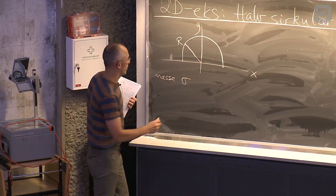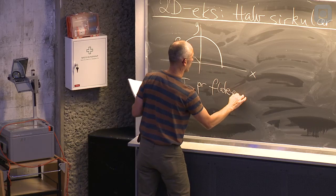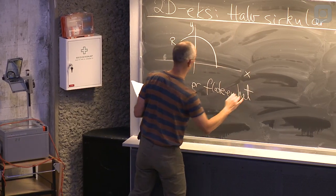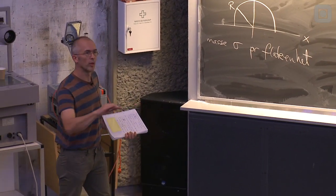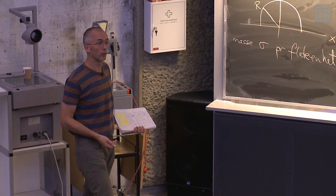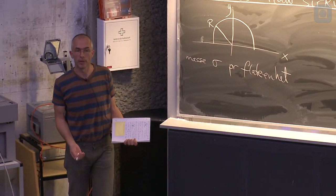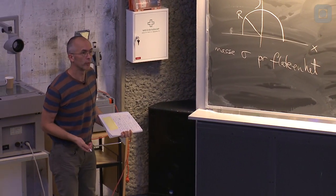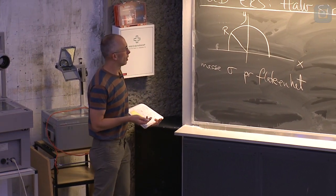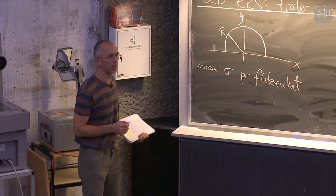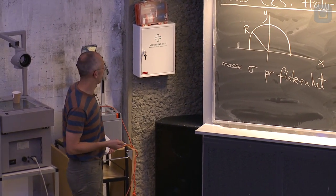Her er en masse per flatenhet, som vi kaller sigma. Vi ser at så lenge vi har en uniform, en gitt massefordeling, vil ikke totalmassen eller massetettheten dukke opp i sluttsvar. Vi får samme posisjon på tyngdepunktet, enten vi har en tung eller lett skive. Men for å ha oversikten når vi regner, så la oss beholde den.